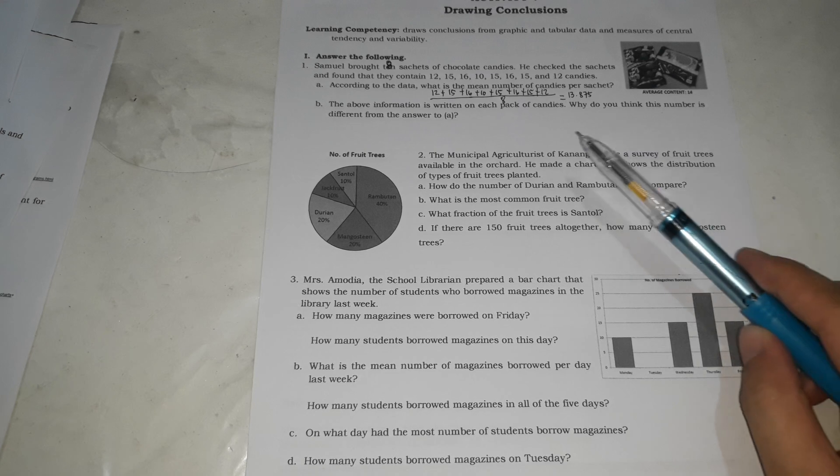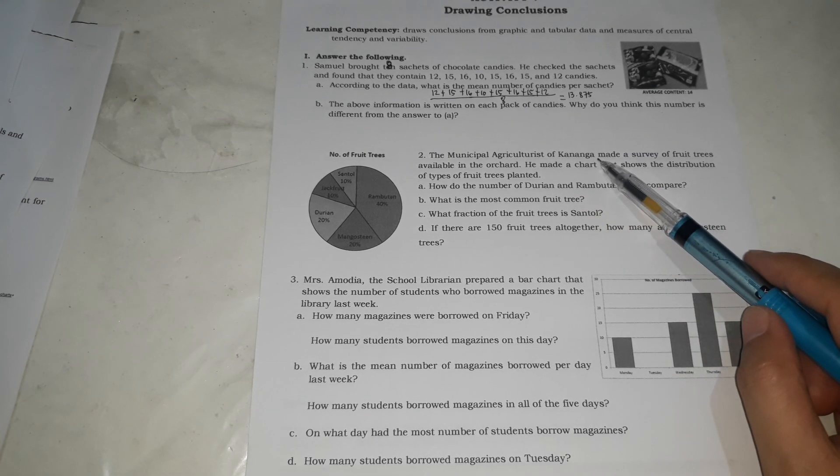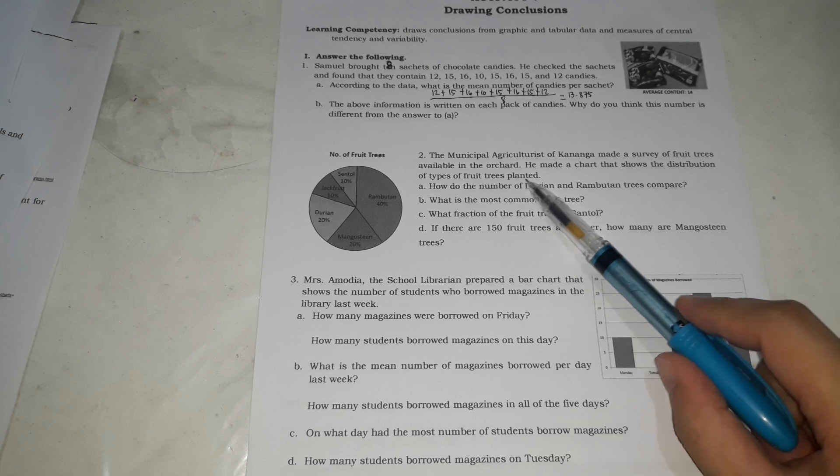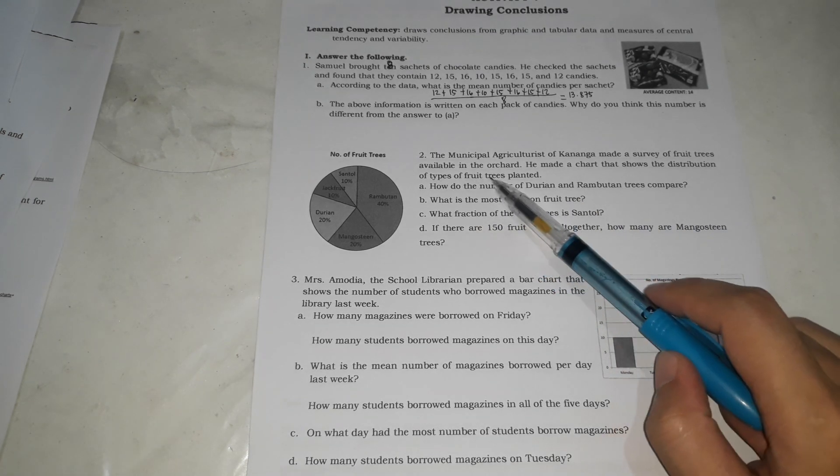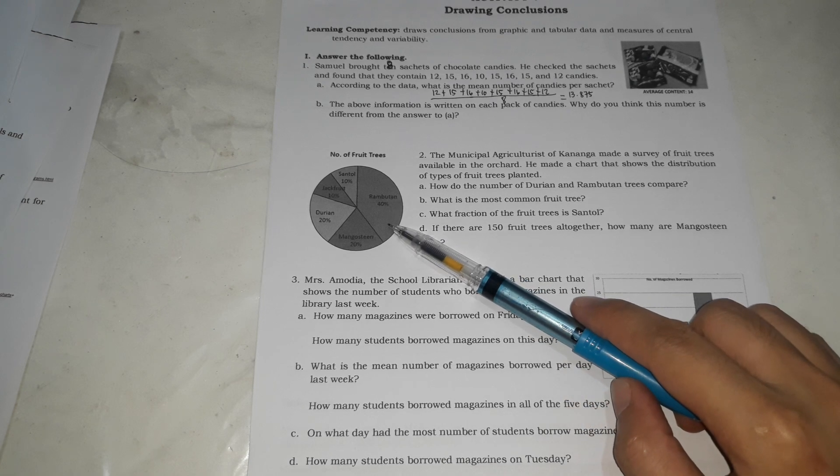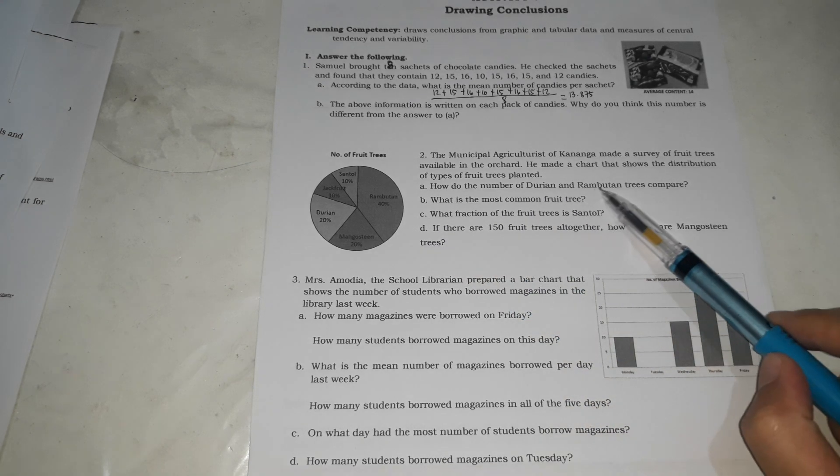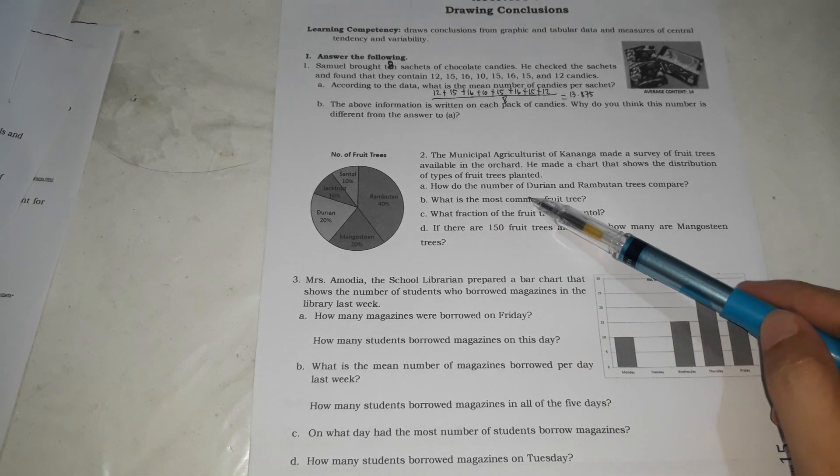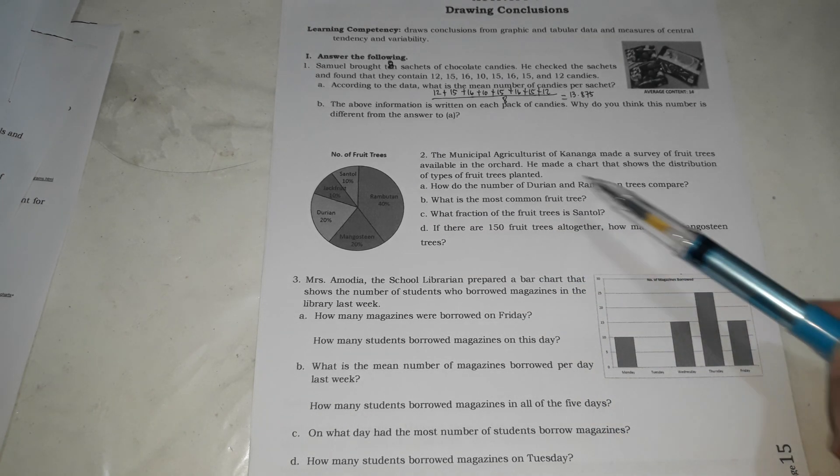And here, the municipal agricultures of Kananga made a survey of fruit feeds available in the orchard. We made a chart that shows the distribution of types of fruits, fruit trees planted. This is the chart, the pie chart. How do the number of durians and rambutan trees compare?